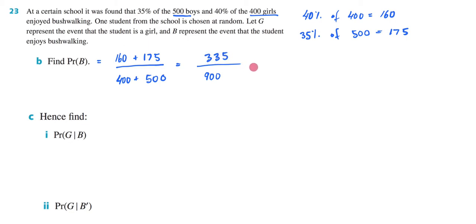We have to represent this as a decimal, and the back of the book has it as 0.372. So that is our answer to Part B.